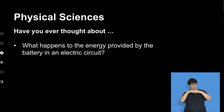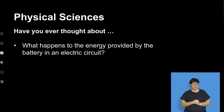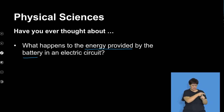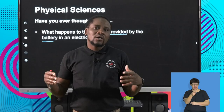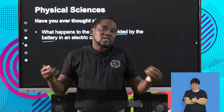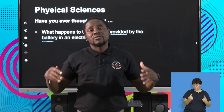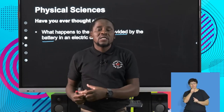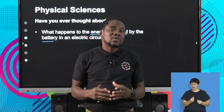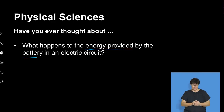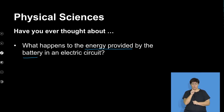The thought that's going to guide our discussion for today is: have you ever thought about what happens to the energy provided by the battery in a circuit? Immediately you talk of energy, you are tempted to refer to the law of conservation of energy, which talks about energy conversion, the fact that energy cannot be created or destroyed. So it's very important to appreciate that a circuit has a lot to do with energy — we want to discover what happens exactly to the energy of the battery in as far as the circuit is concerned.